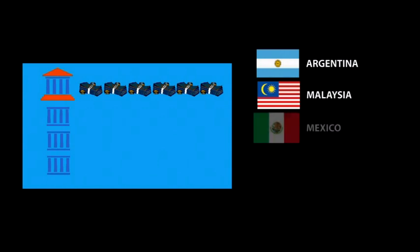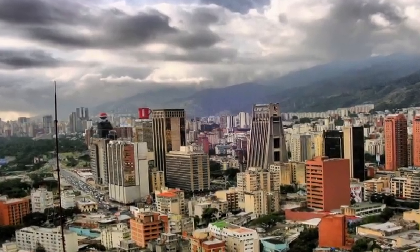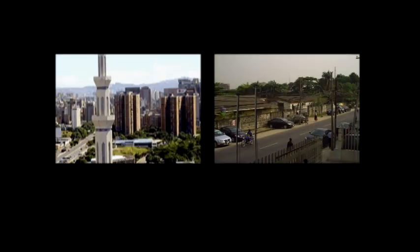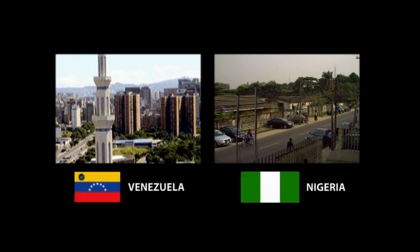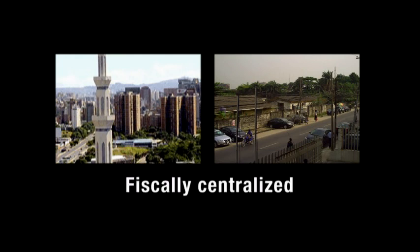Then there are those federal countries where the central government collects over 80 percent of the revenue, such as Argentina, Malaysia, Mexico, Russia, and South Africa. And there are a small number of federal countries in which the federal government collects more than 95 percent of all revenue. Venezuela and Nigeria are among these. These are fiscally centralized federations.